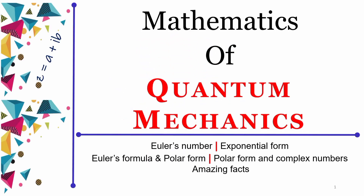In this video we would be continuing our discussion on the mathematics of quantum mechanics. As we are learning the mathematics of quantum mechanics starting from complex numbers, it would help us to learn more about the details of quantum physics. The objective of this series of videos is to lay out the entire foundation of mathematics in a very clear and easy manner. In today's video we would be discussing Euler's number, Euler's formula and polar form.